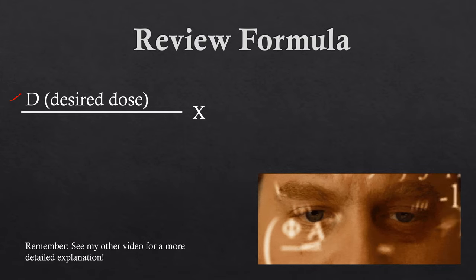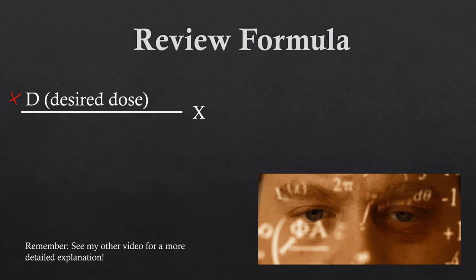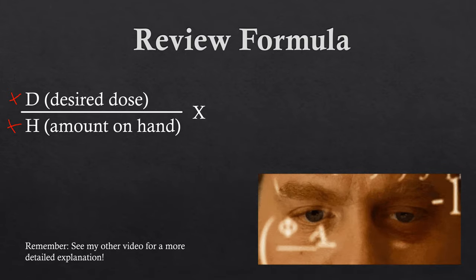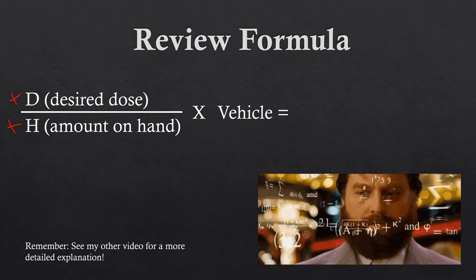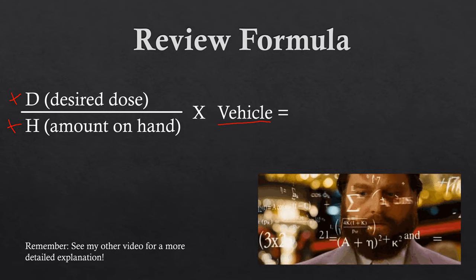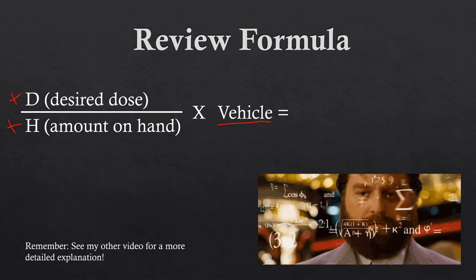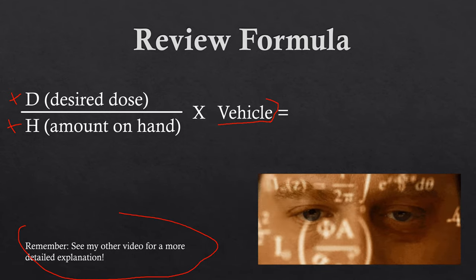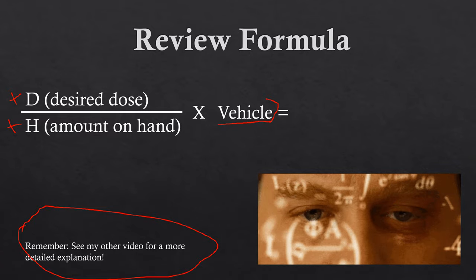First things first: D is going to be the desired dose — the ultimate amount we want to give the patient. H is the amount we have on hand; if it's a 20 milligram pill of Lasix, it comes in 20 milligrams. Vehicle is how the medication is given — so if it's a 20 milligram pill, it's 20 milligrams in one pill; if it's 10 milligrams per mL, the vehicle is one mL. I go into greater detail in the tutorial video.